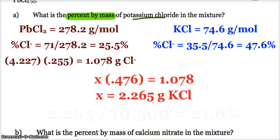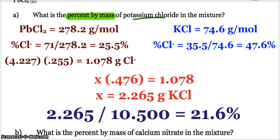Alright, but again, they want the percent by mass in the mixture. So I ultimately have to say, okay, the 2.265 divided by my mixture, which was 10.5, times 100, of course, 21.6%.